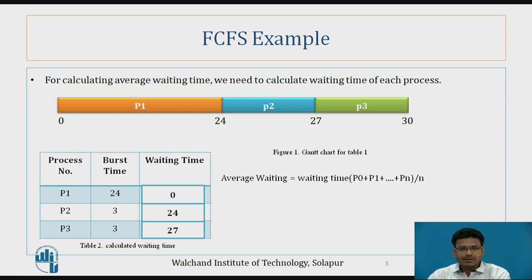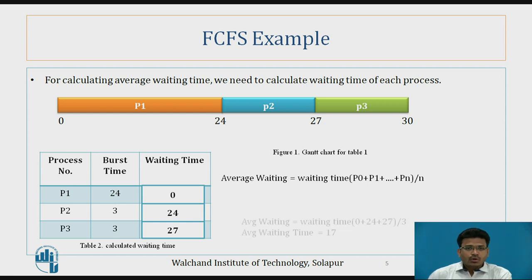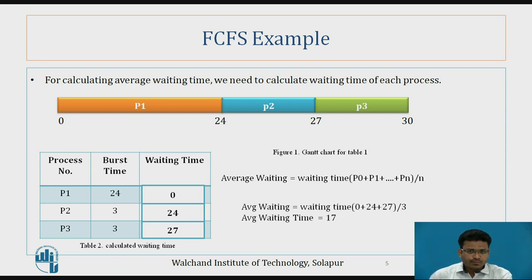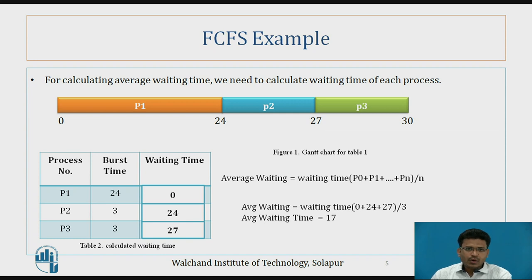The formula for average waiting time is: sum of waiting times of P1, P2, ... Pn divided by the total number of processes. So here, average waiting time equals (0 + 24 + 27) divided by 3. The average waiting time is calculated as 17 milliseconds. In this way the FCFS scheduling algorithm works.